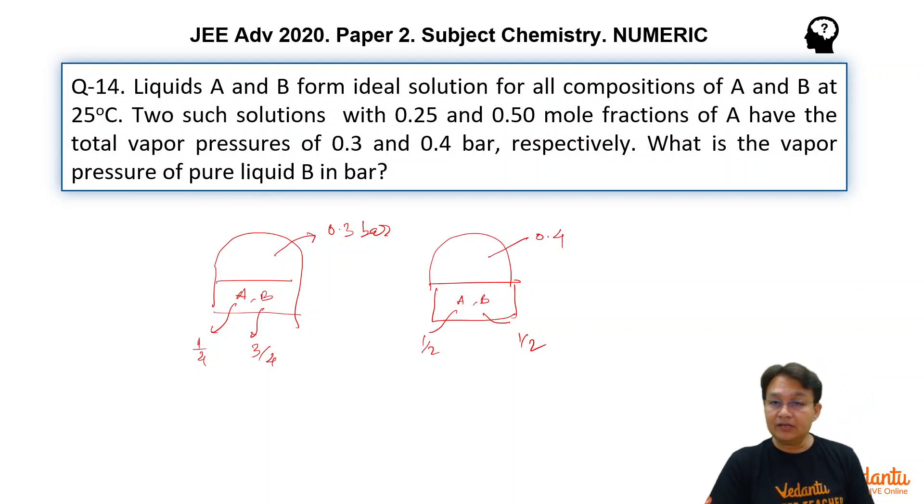Since A and B are forming ideal solutions at all compositions, that means they will follow Raoult's Law. So this question is a very simple question of Raoult's Law for binary liquid solutions.